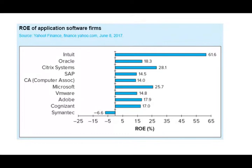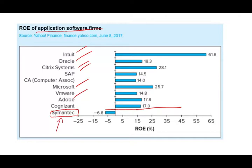Even within each industry, there will be different performance for individual companies. Looking at application software firms by return on equity, most do well — Intuit, Oracle, Citrix, SAP, Microsoft, and Adobe — except for example Symantec at negative 6.6%. If you invested in the software application industry overall you should be fine, but selecting that particular company would give you a negative return on equity. If your return on equity is 61.6% like Intuit, the stock should be doing fairly well.